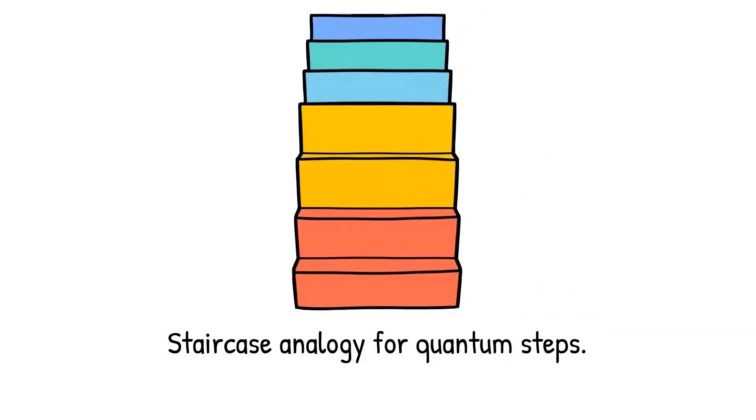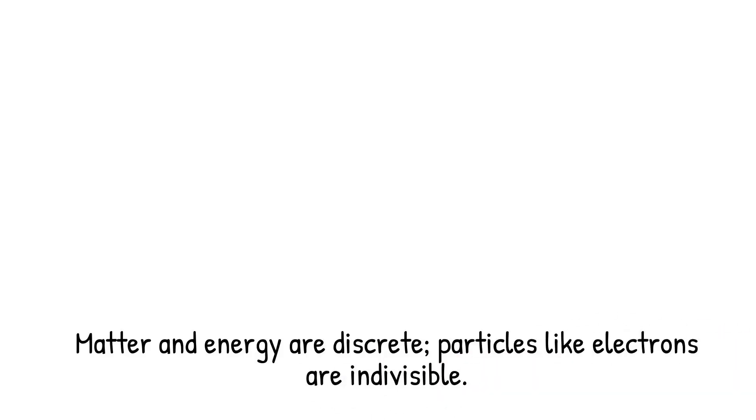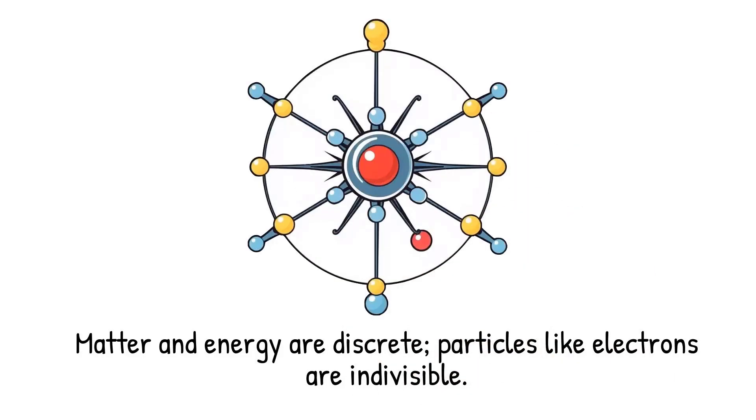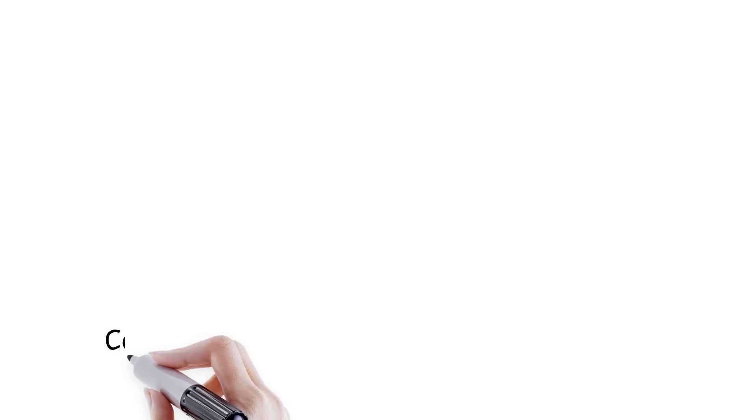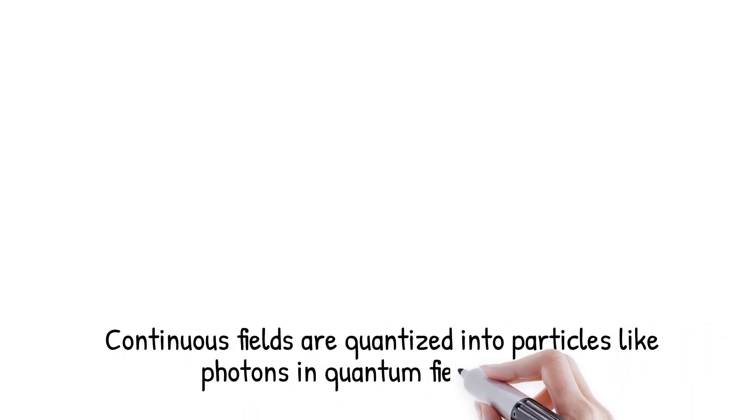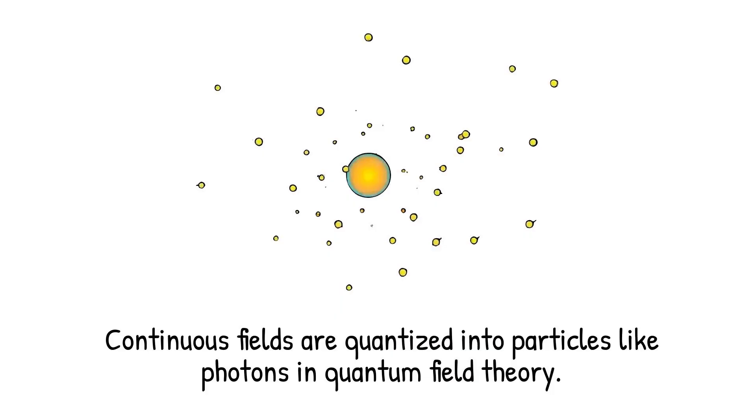Not only energy but also matter shows discreteness. Elementary particles such as electrons and quarks appear indivisible, resisting subdivision into smaller parts. Fields once thought continuous, like the electromagnetic field, are quantized into photons. Quantum field theory describes all interactions in terms of discrete excitations of fields. The world of the very small cannot be infinitely divided.